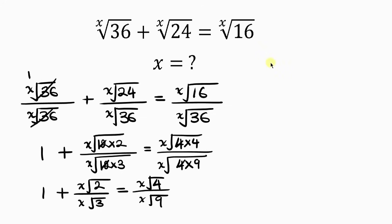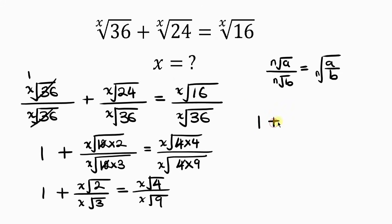The 12 cancels with 12, and the 4 cancels with 4, so we have 1 plus the x-th root of 2 all over the x-th root of 3, equal to the x-th root of 4 all over the x-th root of 9. We apply the property that the x-th root of a over the x-th root of b equals the x-th root of a over b, giving us 1 plus the x-th root of (2/3) equals the x-th root of (4/9).